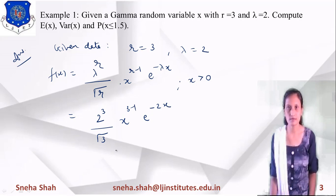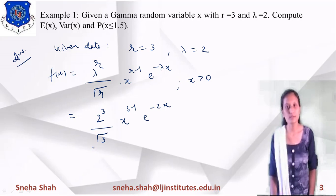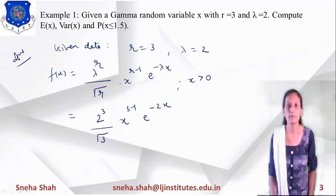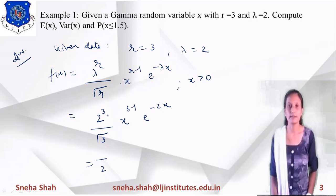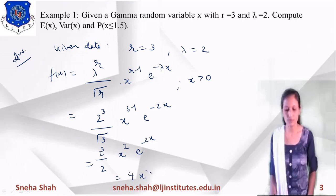With λ = 2 and r = 3 substituted, we now evaluate Γ(3). Since Γ(3) = 2! = 2, we have 2³ / 2 = 8/2 = 4. So x^(3−1) = x², giving us f(x) = 4 · x² · e^(−2x). This is the final probability density function for this example.